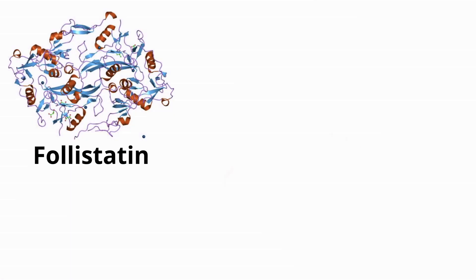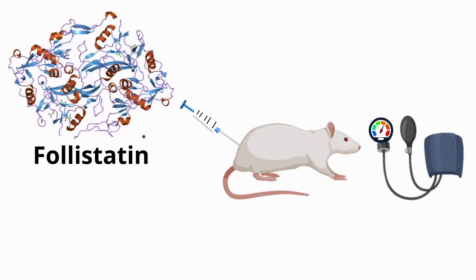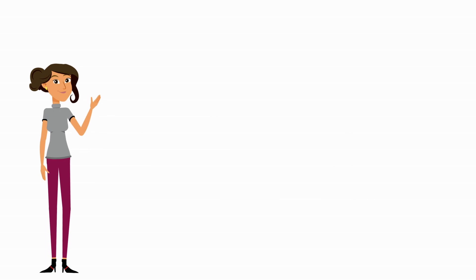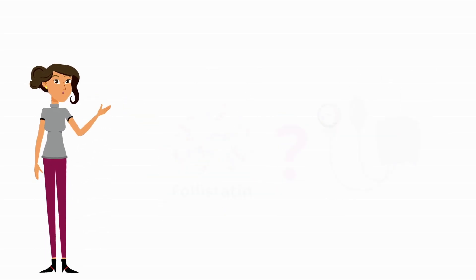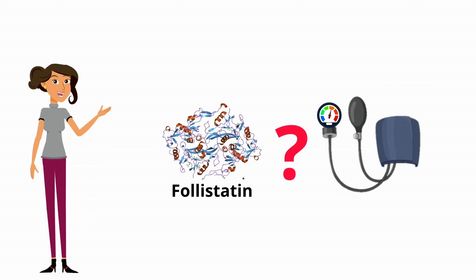My lab has shown that a protein called follistatin lowers blood pressure in hypertensive rats, and I use agonists and blockers of ion channels on cells and vessels of hypertensive rats to see how follistatin lowers blood pressure.